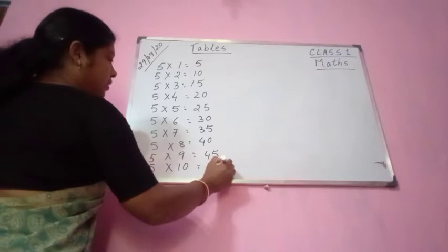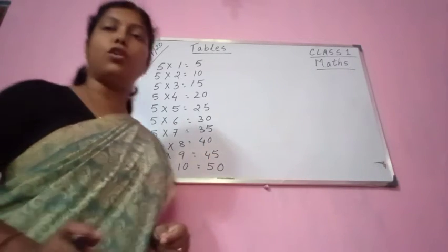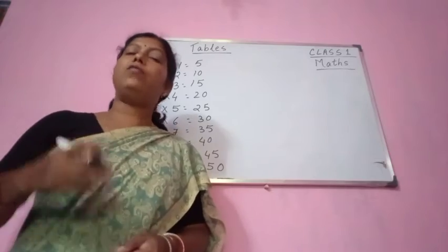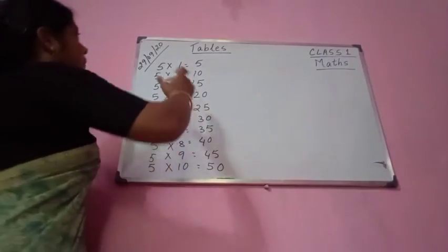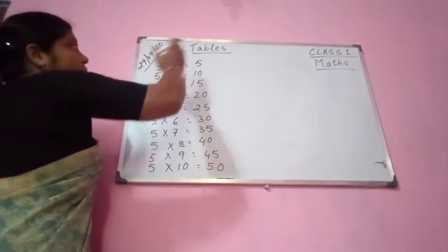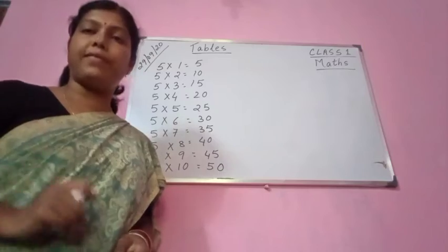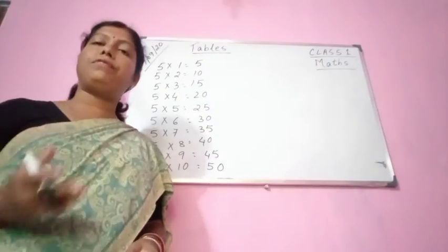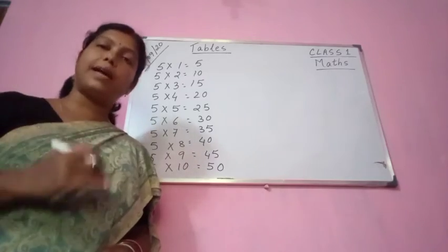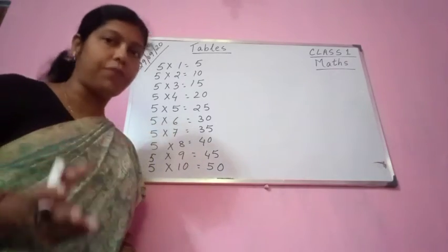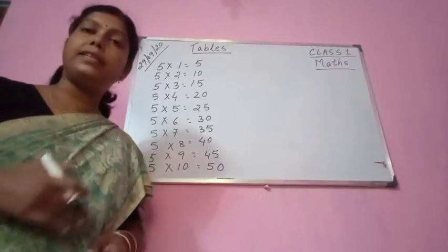You will notice one thing: multiplication is repeated addition. In what ways? See here — 5 ones are 5, 5 twos are 10, meaning 5 plus 5 is 10. 5 threes are 15 — 5 plus 5 plus 5 is 15. If you add 5 three times it comes to 15. So multiplication is also known as repeated addition.